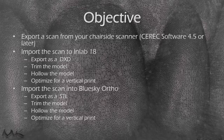We're really going to delve into the import functions and look at a few key criteria: how do we trim the model, how do we hollow the model, and how do we optimize for vertical print to save printer space?